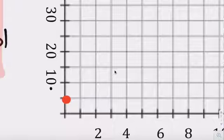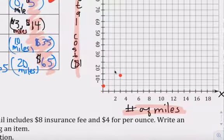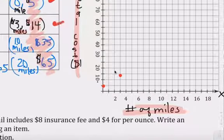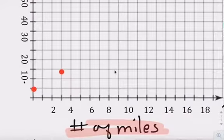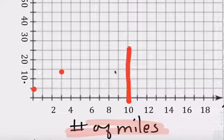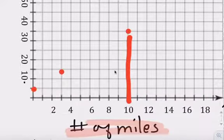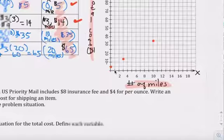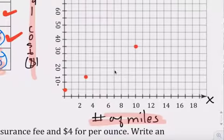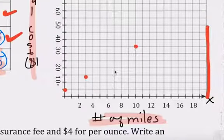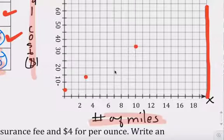And then $10, 35. $10. Go up to $35. Right there. And then $20, 65. So right there.